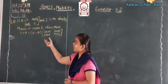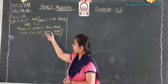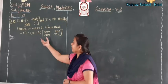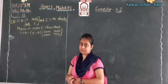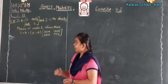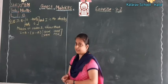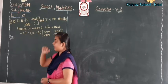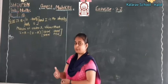The question is: if A is equal to the matrix [0, -tan(α/2); tan(α/2), 0] and I is the identity matrix of order 2, then we have to show that (I + A) is equal to (I - A) into the matrix [cos α, -sin α; sin α, cos α].